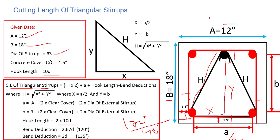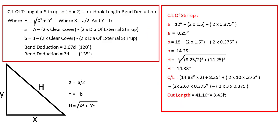We have a 120 degree angle bend and a 135 degree angle bend. The bend deduction for 120 degrees is 2.67d, and for 135 degrees it is 3d. Now we have all the data needed to find h, where x = a/2 and y = b, using Pythagoras theorem.